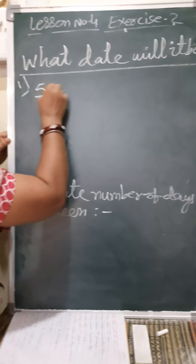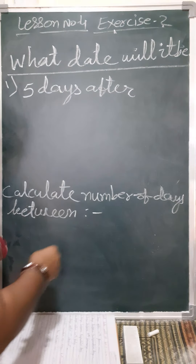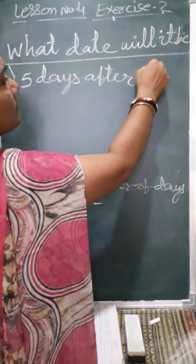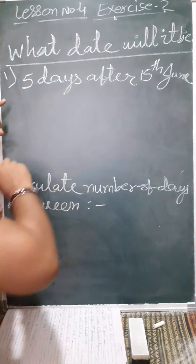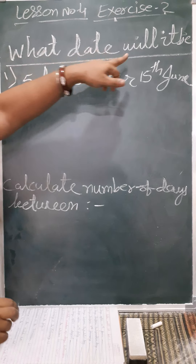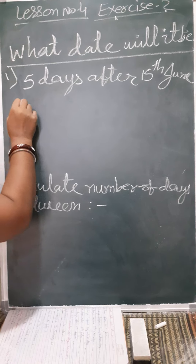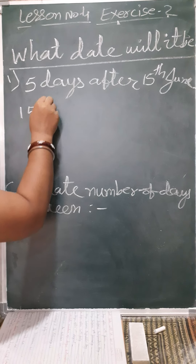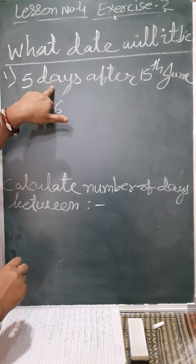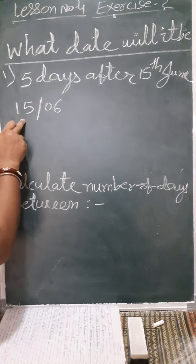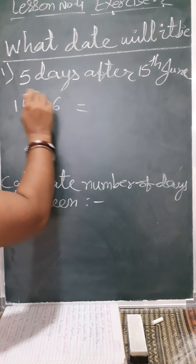Now see: 5 days after 15th June — how will we calculate, what date it will be? 5 days after 15th June. 15th June means which month? Month 6, yes. After 5 days means we have to add in the days, not in the month. So how will we write after 5 days?